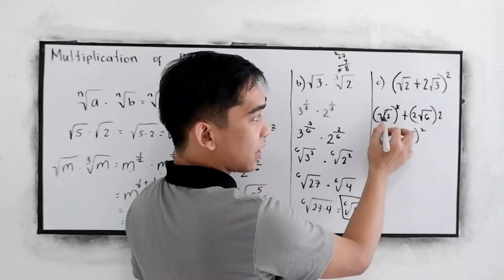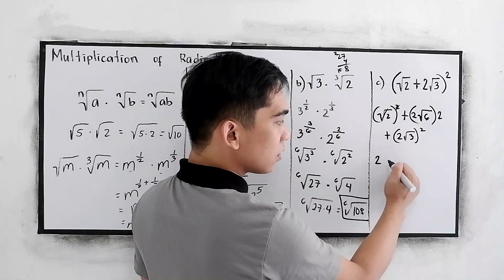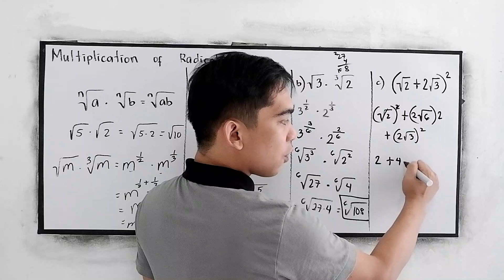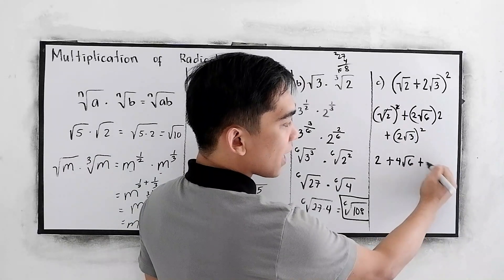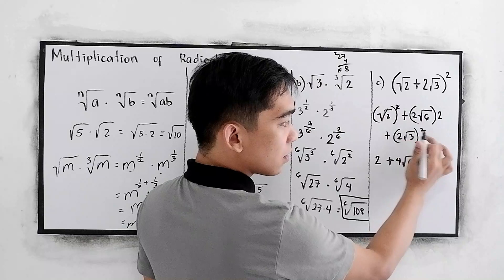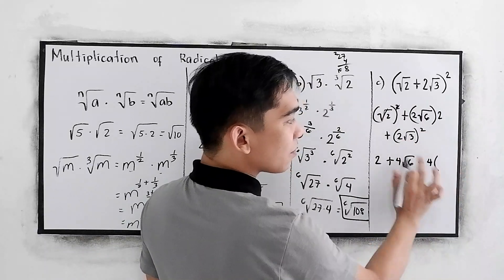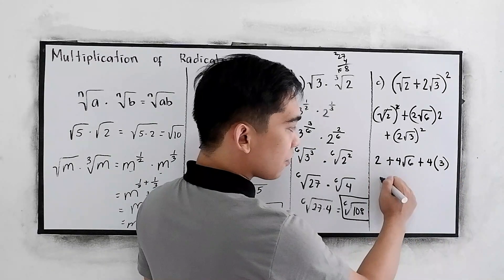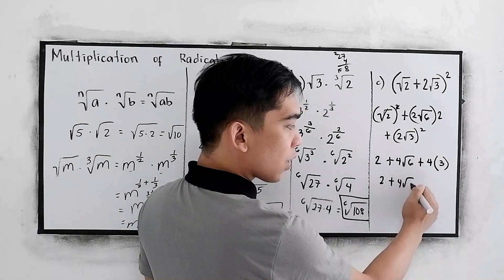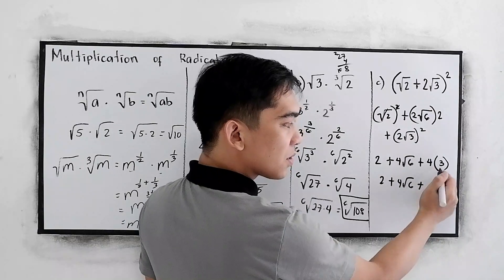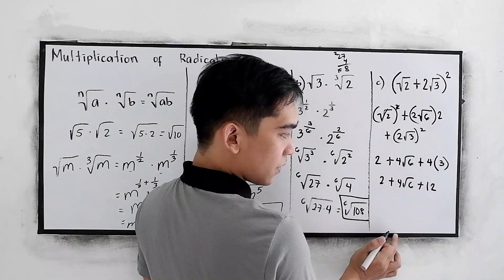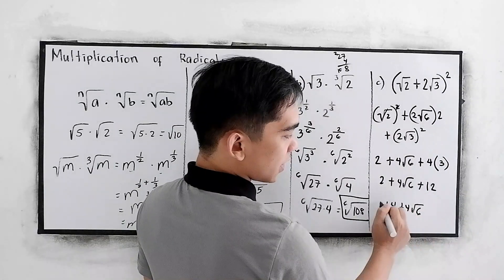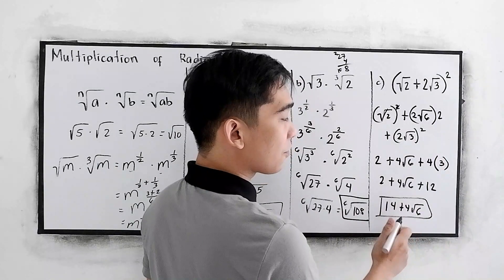We can cancel the square root of any perfect square. So square root of 2 squared is 2, plus 2 times the product of the two terms: 2 times square root of 2 times 2 square root of 3 gives 4 square root of 6, plus 2 square root of 3 squared which is 4 times 3 equals 12. Combining like terms: 2 plus 12 is 14, so our final answer is 14 plus 4 square root of 6.